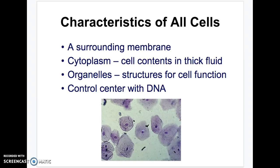Let's look at what all cells have, no matter what type. They all have a membrane. They all have cytoplasm — that really thick jelly fluid. They all have at least a couple of organelles. And they all have an area where DNA is found.